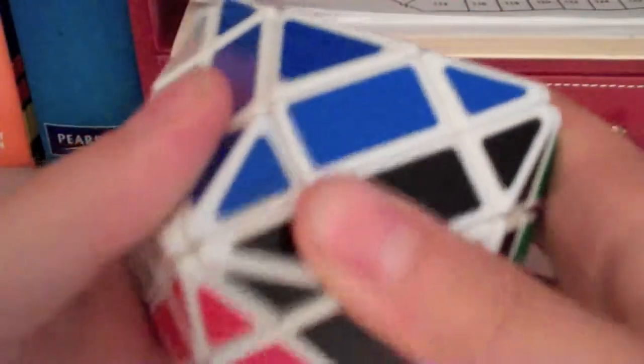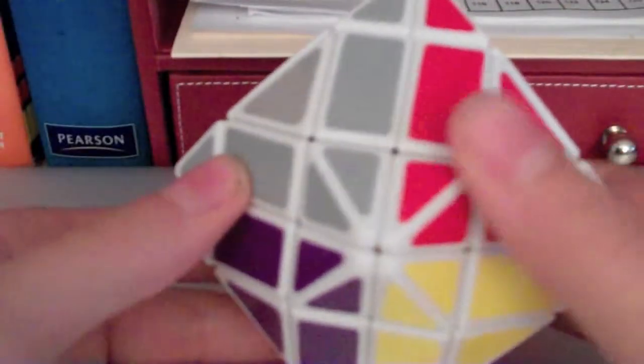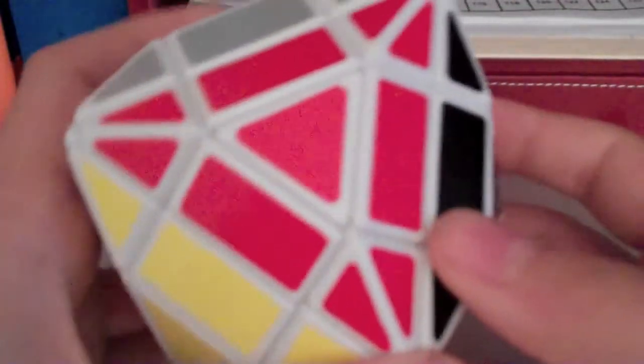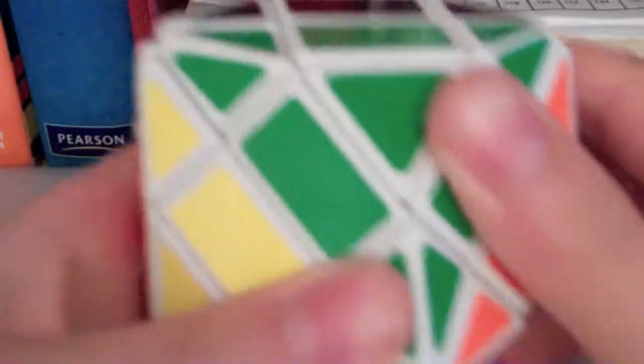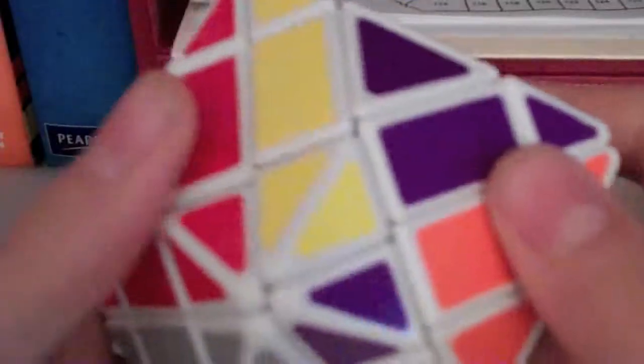However, the puzzle still locks up. That's one of the major drawbacks to this puzzle. Because it's a ball core, it tends to lock up quite a bit. How it is now, the puzzle still locks up. It doesn't corner cut and it's still a little bit on the stiff side. You can see it just locked up there. You can hear it. There's so much friction between the pieces that it actually starts clicking.